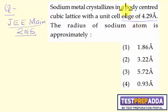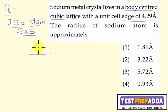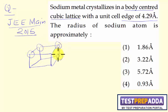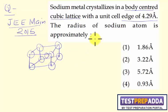Looking at the question — body-centered cubic lattice. In a body-centered cubic lattice, atoms are at the corners of the cube as well as at the body center. The edge length is given as 4.29 angstrom, and the radius of the sodium atom is what we need to find.